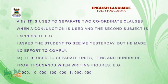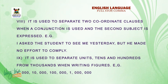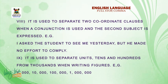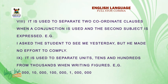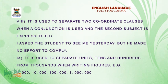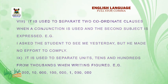Number eight: it is used to separate two coordinate clauses when a conjunction is used and the second subject is expressed. E.g., I asked the student to see me yesterday, but he made no effort to comply. Number nine: it is used to separate units, tens, and hundreds from thousands when writing figures. E.g., one thousand, ten thousand, hundred thousand, one million.